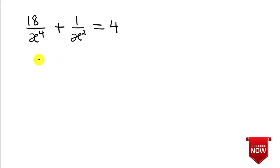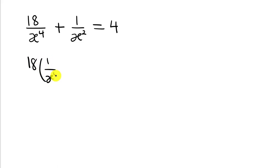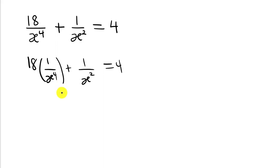We are going to have 18 multiplying 1 over x to the power 4, plus 1 over x squared, equal to 4. Now, 1 over x to the power 4 can be rewritten as (1 over x squared) all squared, because that is the same as 1 squared over x squared, all squared.